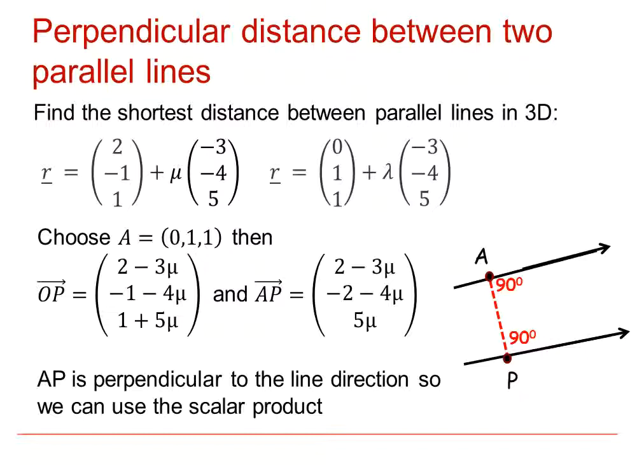Notice the displacement vector from A to P is in terms of the parameter mu. Once we have the displacement vector from A to P, we can follow either of the methods we saw in the previous recording of finding the shortest distance from point A to general point P.